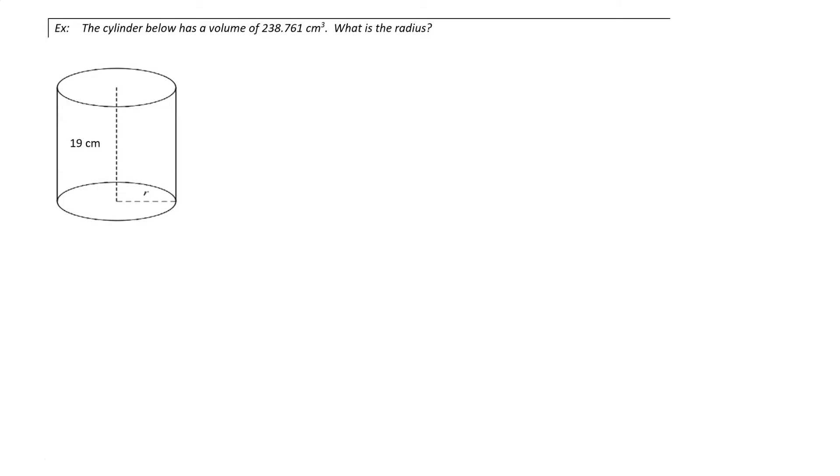In this example, the cylinder below has a volume of 238.761 cubic centimeters. We're asked to find the radius, and we've been given the height of the cylinder.